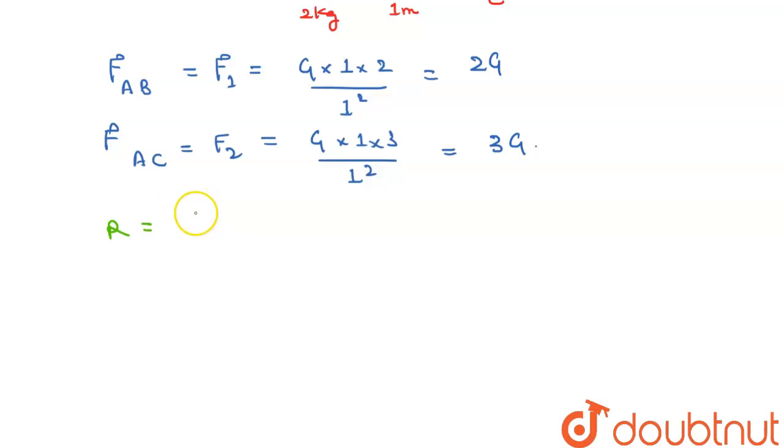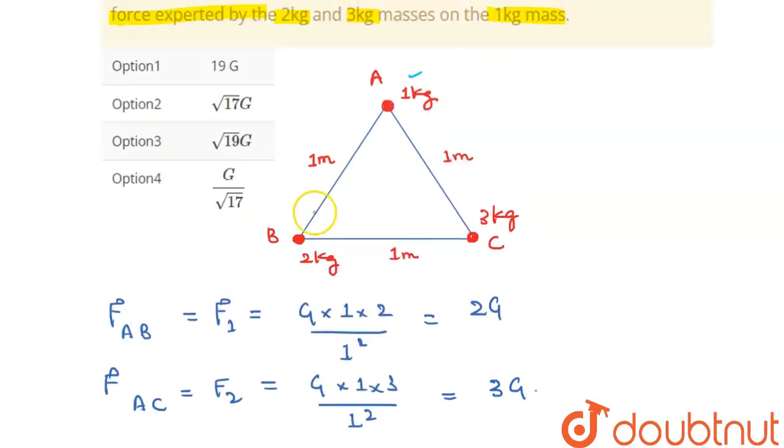And since it is equilateral triangle, we know that interior angles will be equal, that will be 60 degrees.